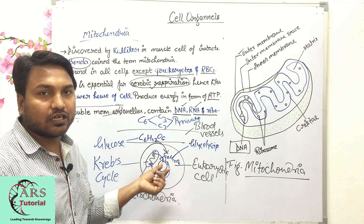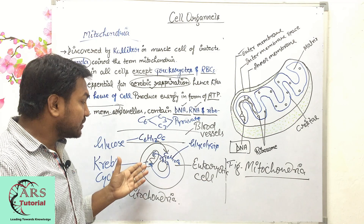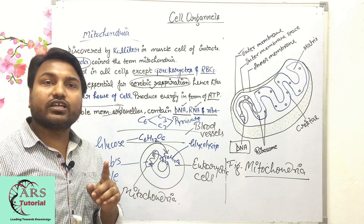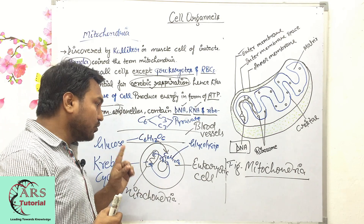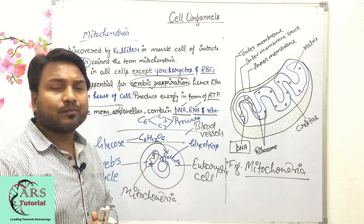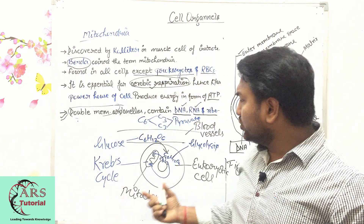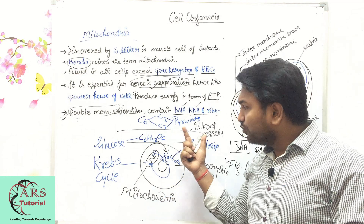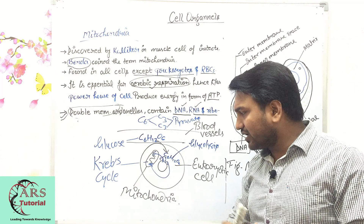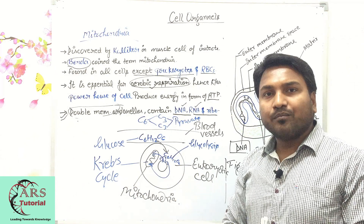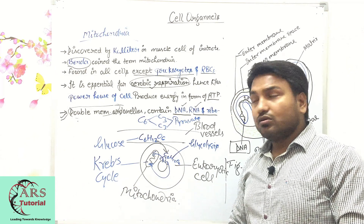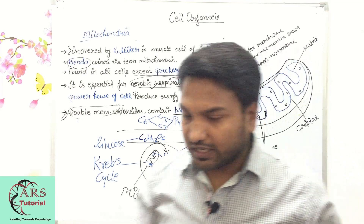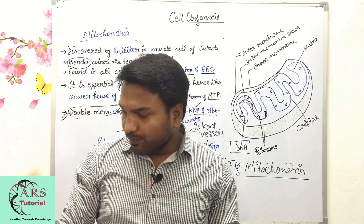Mitochondria produces energy in the form of ATP — that is why mitochondria is known as the powerhouse of the cell. For those in Class 10, this topic is explained in greater detail including what the Krebs cycle is and how glucose is further broken down in the cell. Next, we will discuss another cell organelle: plastids.